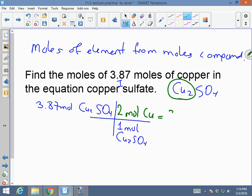Therefore, 3.87 moles of Cu2SO4, which is cancelled out, times 2 moles of copper gives me 7.74.